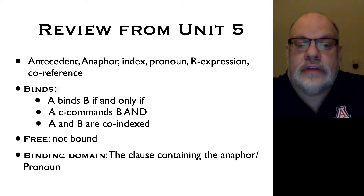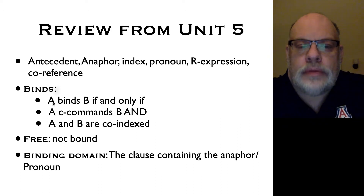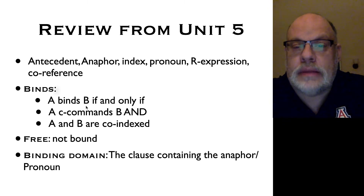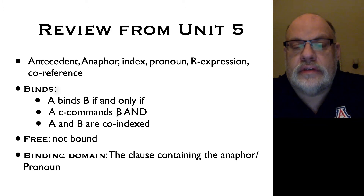There are two critical parts to binding. The first is: A binds B if A C-commands B — so they must be in a C-command relationship — and they must be co-indexed. Binding is not a reflexive relation; it actually cares about asymmetries. So if A binds B, that does not mean that B binds A. A is the binder and B is the bindee. It's an asymmetric relationship where A typically asymmetrically C-commands B.